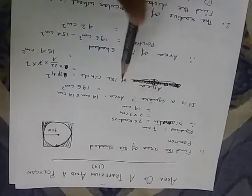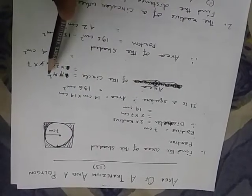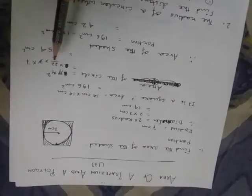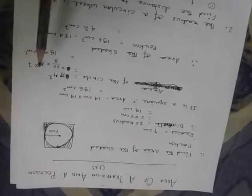Now we are going to find the area of the circle. So area of the circle is pi r square. 22 by 7 into 7 into 7. So 154 cm square.